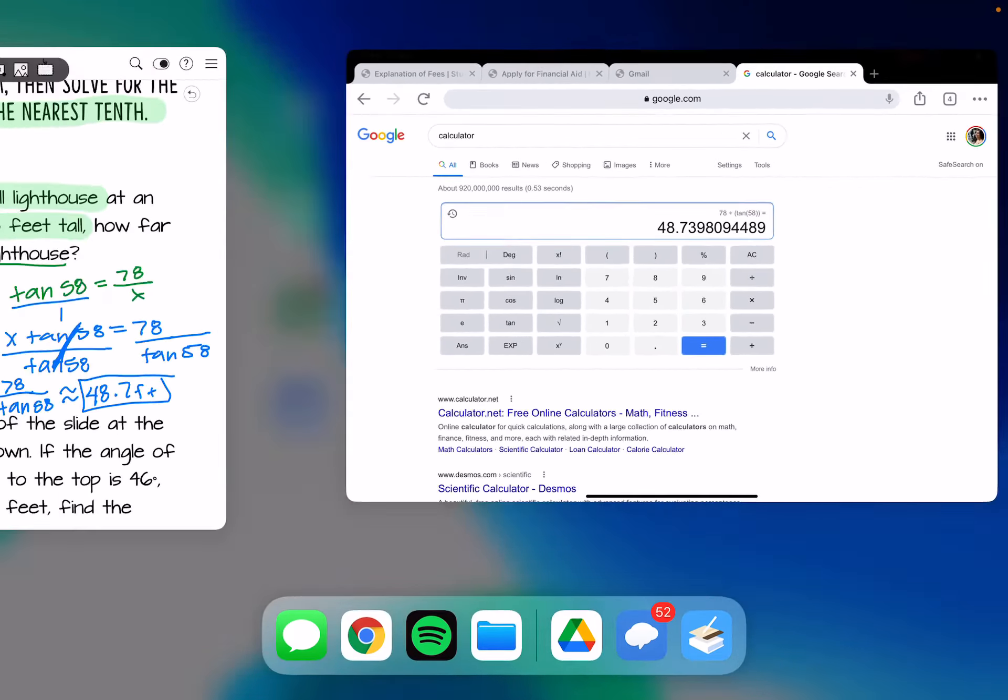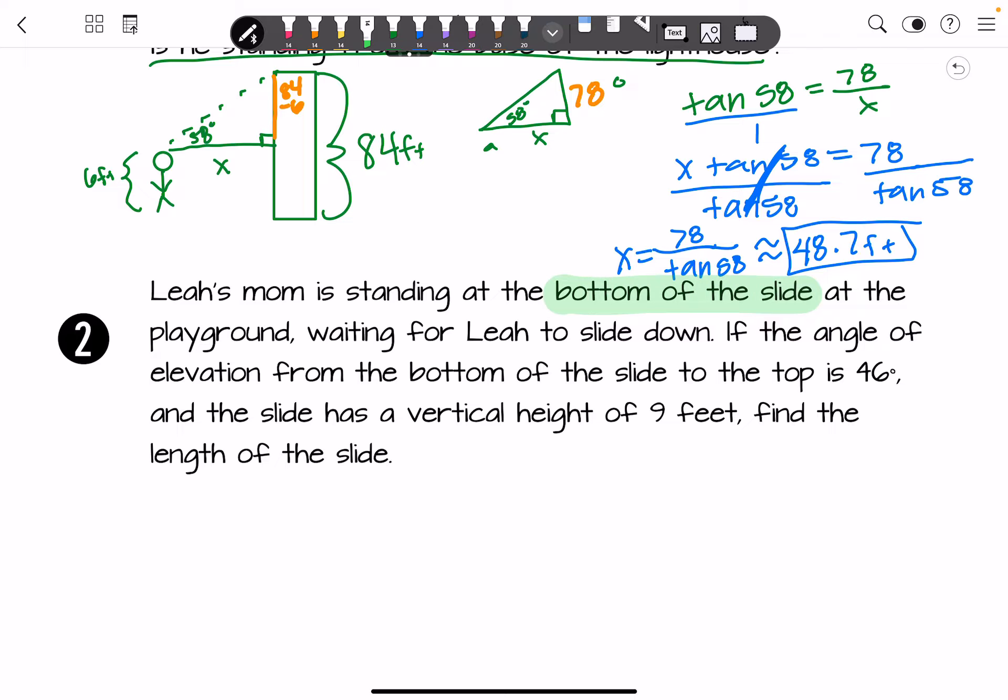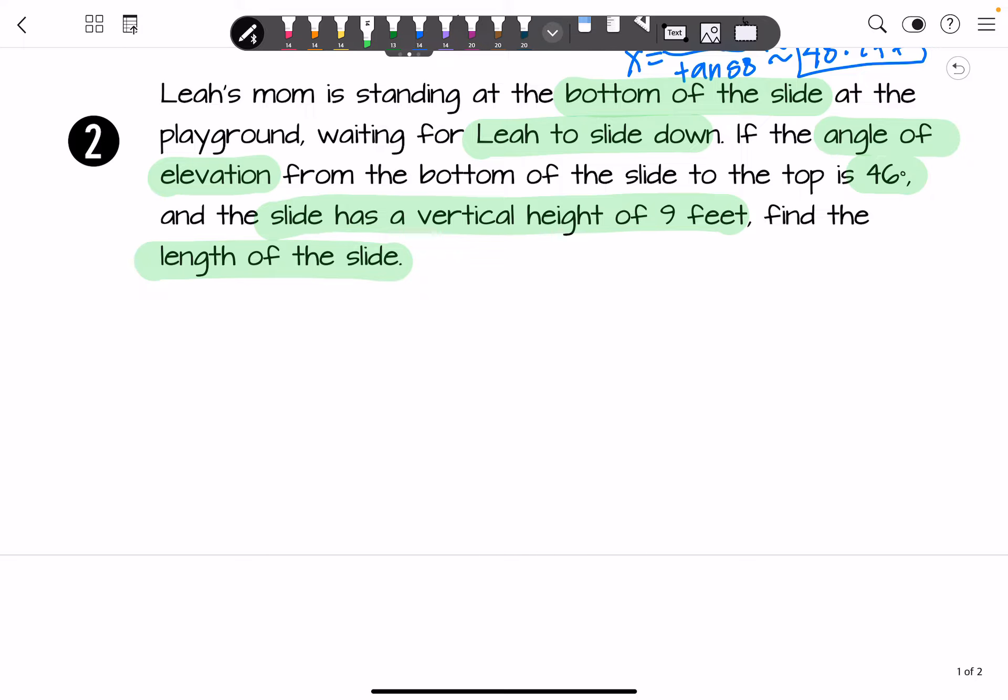All right, now let's try the next one. Leah's mom is standing at the bottom of the slide at the playground waiting for Leah to slide down. If the angle of elevation from the bottom of the slide to the top is 46 degrees and the slide has a vertical height of 9 feet, find the length of the slide. So what we're going to do is draw our picture. We've got the slide here, and we'll put Leah up there. Leah's mom is down here. Her angle of elevation is 46 degrees. The slide has a vertical height of 9 feet. And we want to find the length of the slide.